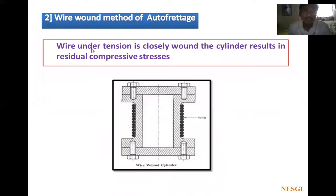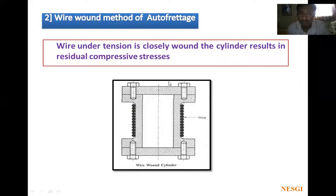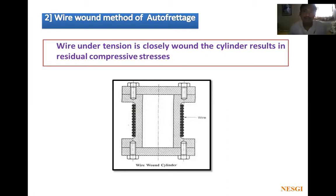The second one is the wire wound method of autofrettage. Wire wound means the wire under tension is closely wound around the cylinder, resulting in residual compressive stresses. You can see here: a metallic wire is wound on the cylinder tightly. Because of that, it will induce compressive stresses in the cylinder, and because of that, the capacity of the cylinder is going to increase. This is the second method to increase the capacity of the cylinder.